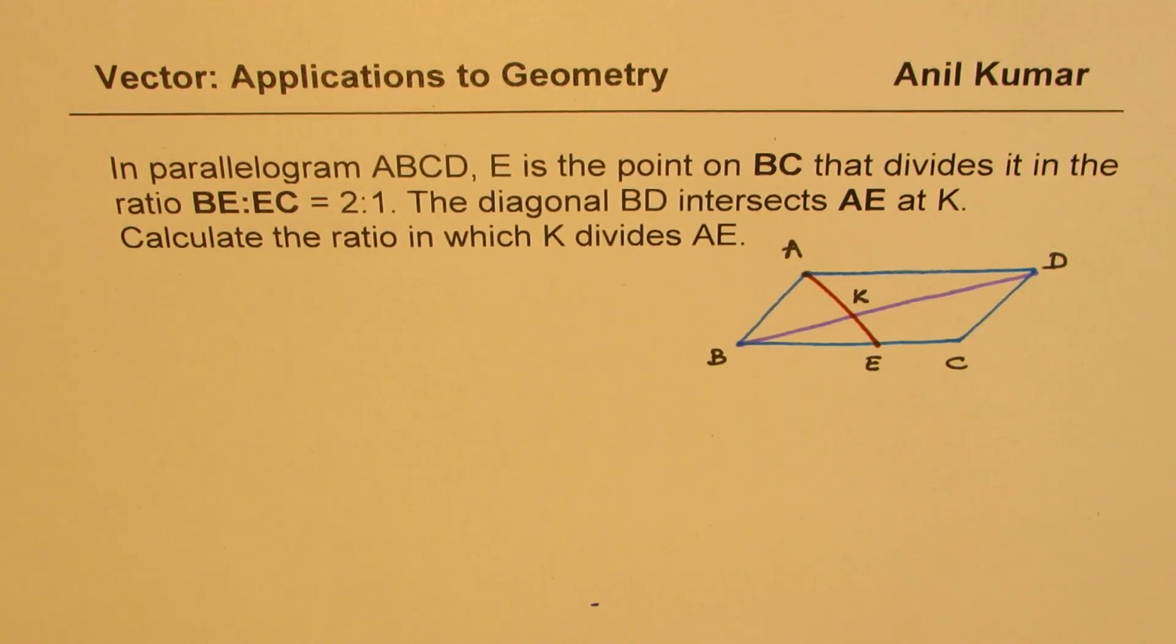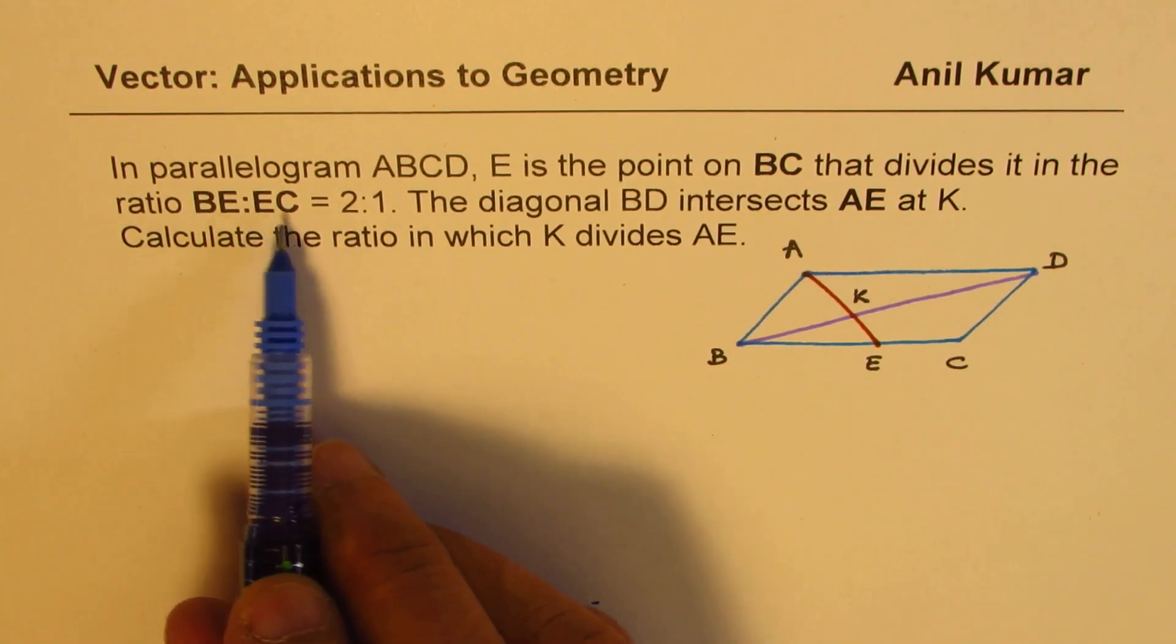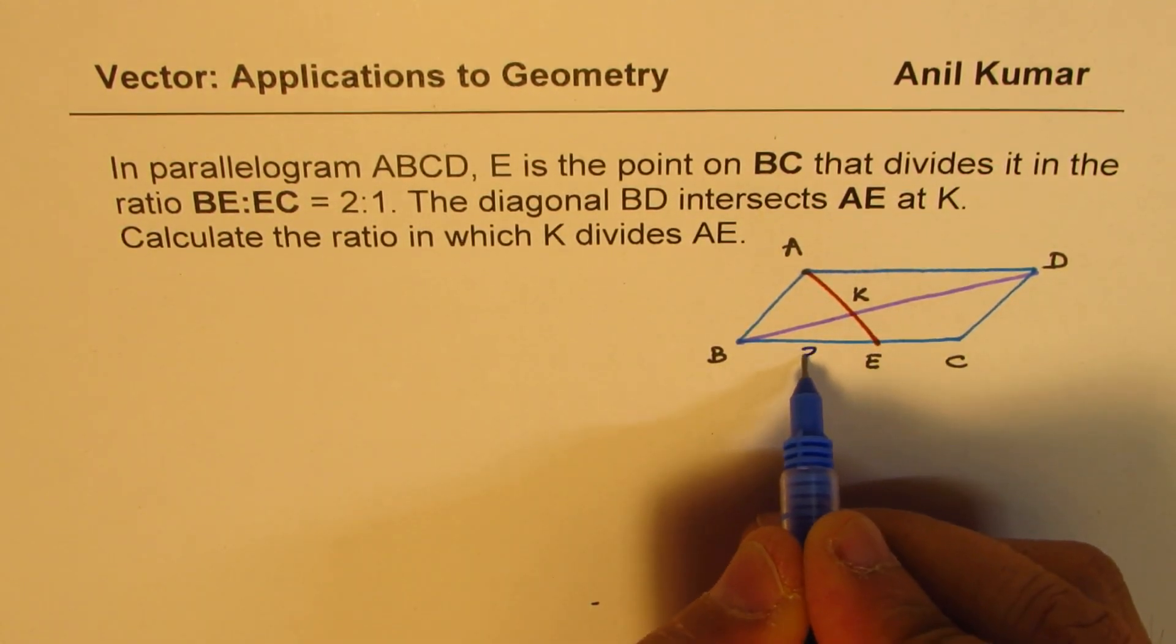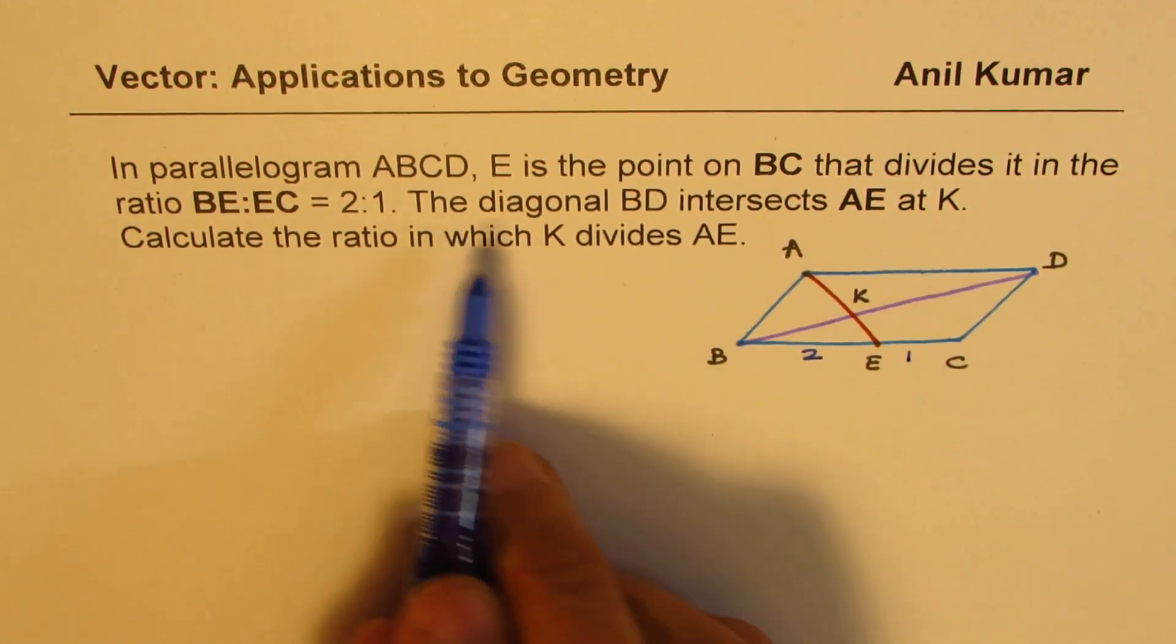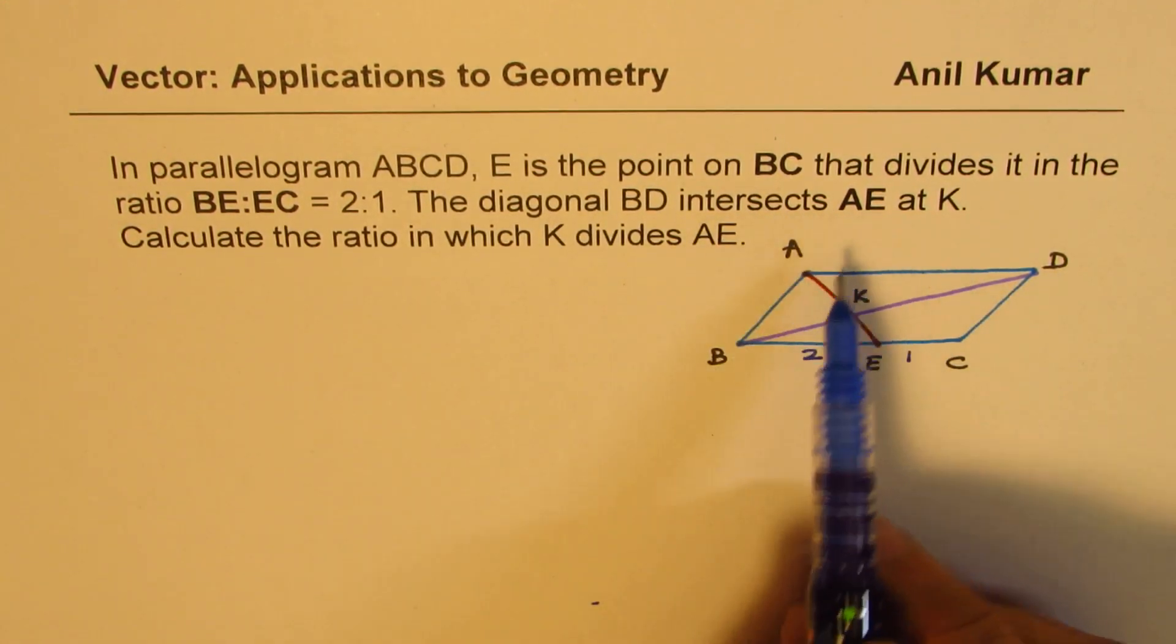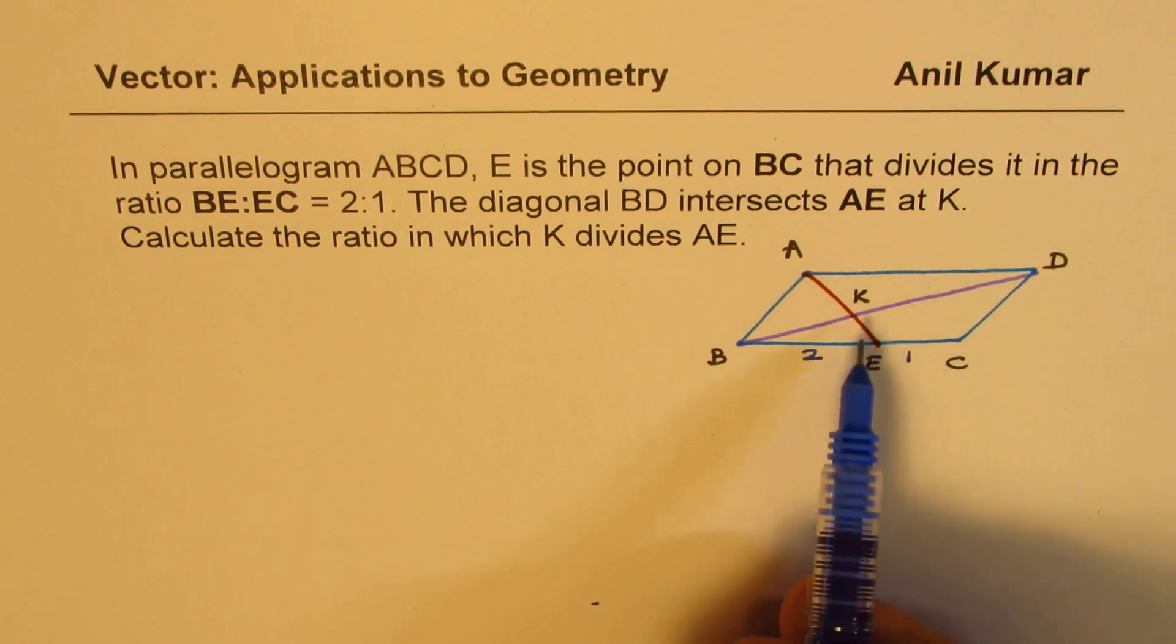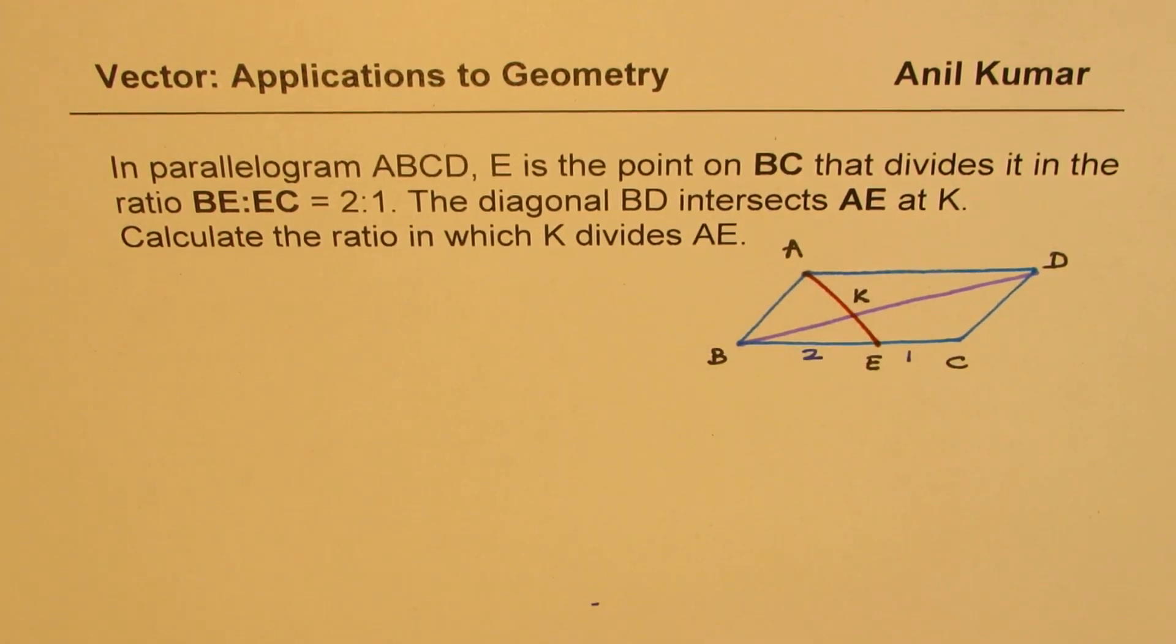The question here is: in parallelogram ABCD, E is a point on BC that divides it in the ratio BE:EC = 2:1. The diagonal BD intersects AE at K. Calculate the ratio in which K divides AE.